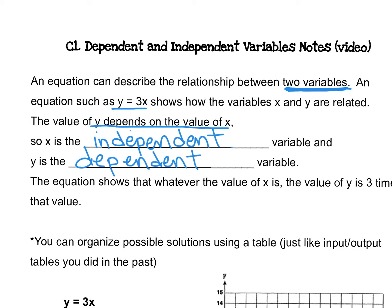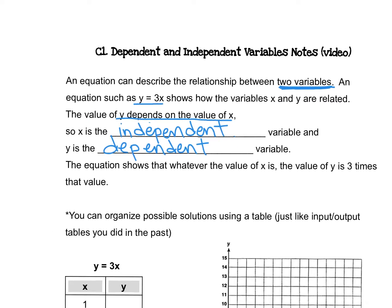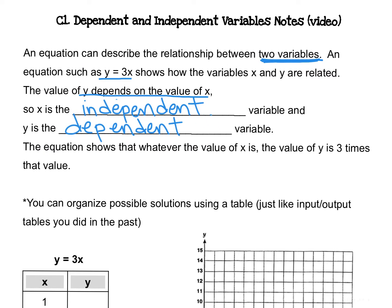If you think about those words, y depends on x. So in order to figure out what y is, we have to know the value of x. Y depends on x, x is independent. The equation shows that whatever the value of x is, the value of y is 3 times that value. So we're still talking about this equation, y equals 3x. This equation is telling us that whatever x may be, y is going to be 3 times greater.